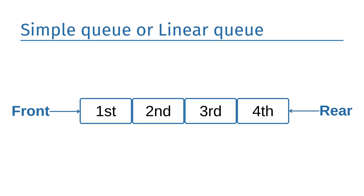Here is the representation of the simple or linear queue. As you can see in the diagram, the queue has four elements — first, second, third, and fourth. The first element represents the front end and the fourth element represents the rear end. The simple queue strictly follows the FIFO (first in, first out) principle, and elements can be inserted only from the rear end.